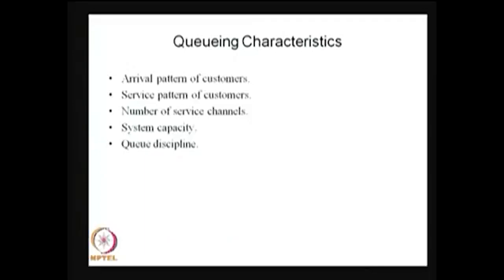To define a queuing system you need a few important characteristics. The first is the arrival pattern of customers — how customers are entering the system and how frequently. Whether customers arrive at constant intervals of time or in a random fashion. If it is constant, the inter-arrival time is deterministic. If customers enter with a random inter-arrival time, we need to know the distribution of that inter-arrival time.